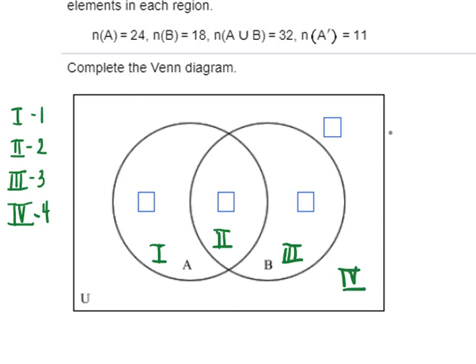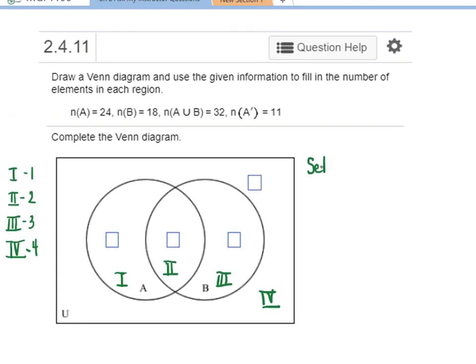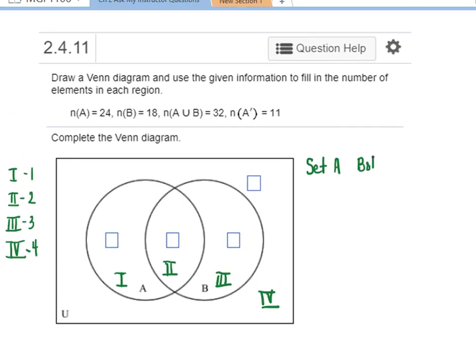Now what I want to make clear is that the set A consists of both region one and region two. If you look at the information we're given, which we're going to go over in a minute, but just as an example, set A is supposed to contain 24 elements. So it might be that, for example, we have 12 elements in region one and 12 in region two, that would add up to 24. Or it might be that we have 10 in region one and 14 in region two, that would add up to 24. It could be that we have zero in region one and all 24 of the elements of A are in region two. We just don't know yet until we analyze the information that we're given.